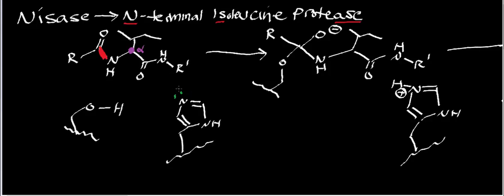Mechanistically, the first step — just like in cysteine proteases — is deprotonation of the nucleophile. In this case, notice it's an oxygen instead of a sulfur, which tells us it's a serine nucleophile. The histidine in the active site deprotonates the serine residue, resulting in nucleophilic attack and generation of a tetrahedral intermediate.